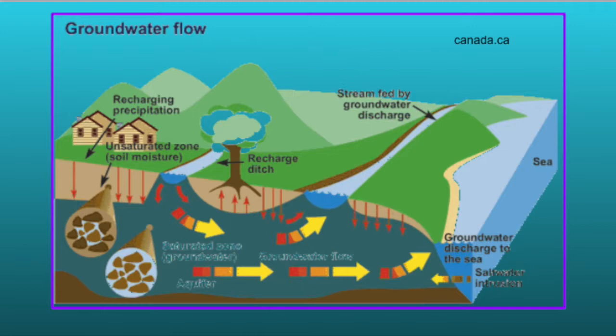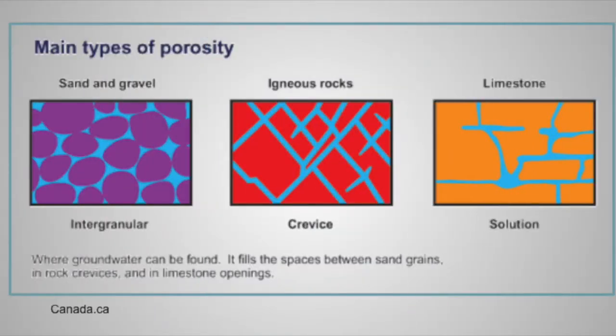The formation of aquifers happens when water from rain, snowmelt, rivers, and lakes goes into the soil and drains down into rock layers. The water stops moving down when it meets a less permeable rock that water can't pass through. Granite is one example of a rock that water can't easily pass through. Sandstone is a good rock layer for an aquifer because of the pore space and the ability of water to travel through it.